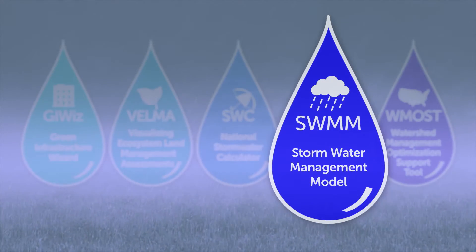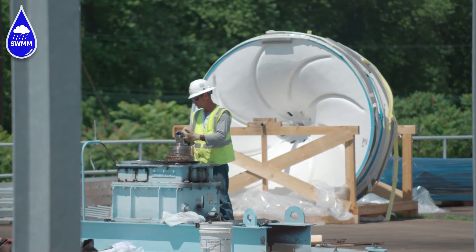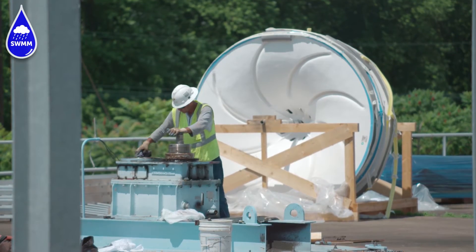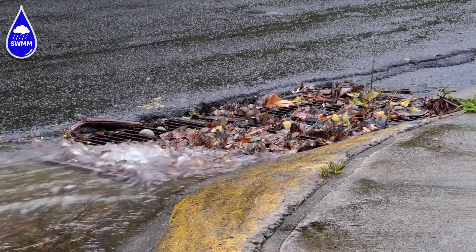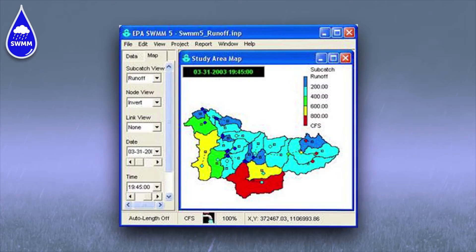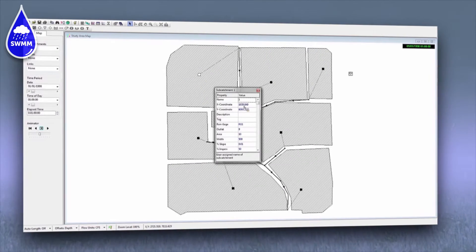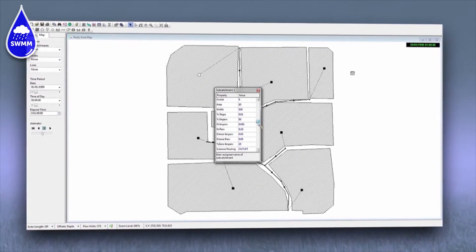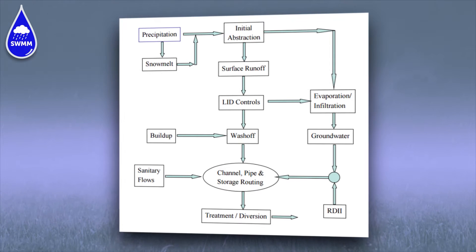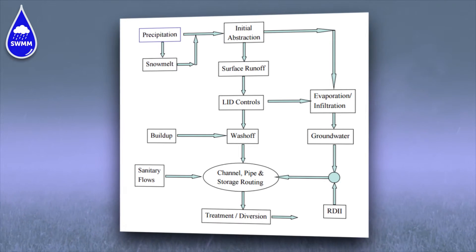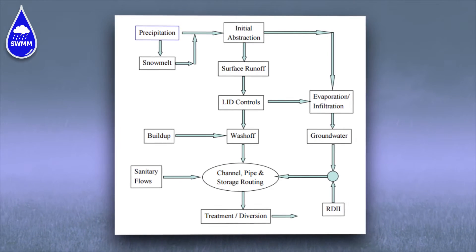The Stormwater Management Model is a dynamic hydrology, hydraulic water quality model used around the world by engineers and water resources managers for planning, analysis, and design related to stormwater runoff, combined sanitary sewers, and other drainage systems in urban areas. SWMM can simulate a single storm event or long-term runoff quantity and quality. It's a complex tool and requires some level of modeling experience in an integrated windows environment. SWMM accounts for various hydrologic processes that produce runoff from urban areas, including rainfall, snow accumulation and melt, interflow between groundwater and the drainage system, and runoff reduction through green infrastructure.